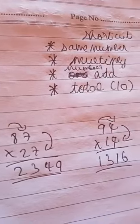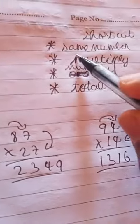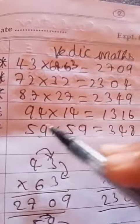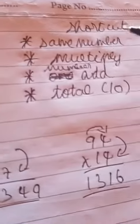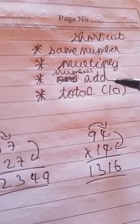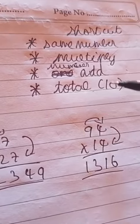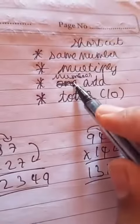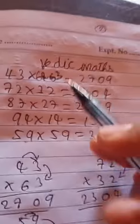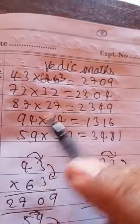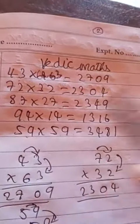If you want to know the shortcut, it will be the same number. The number shown is 3322774499 — that is the same number. You can multiply it and add a number; the total number is 10. How do you say it? 4 plus 6 is 10. 7 plus 3 is 10. 8 plus 2 is 10. 9 plus 1 is 10. 5 plus 5 is 10.